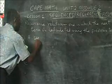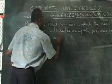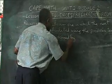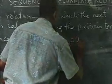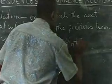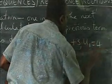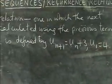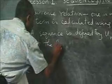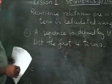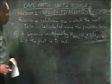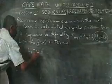Now let's look at an example. A sequence is defined by u(n+1) = u(n) + 3, and we are told that u1 = 4. We need to list the first four terms. Remember, you are told that the first term is four — that is given, so u1 = 4 is given.